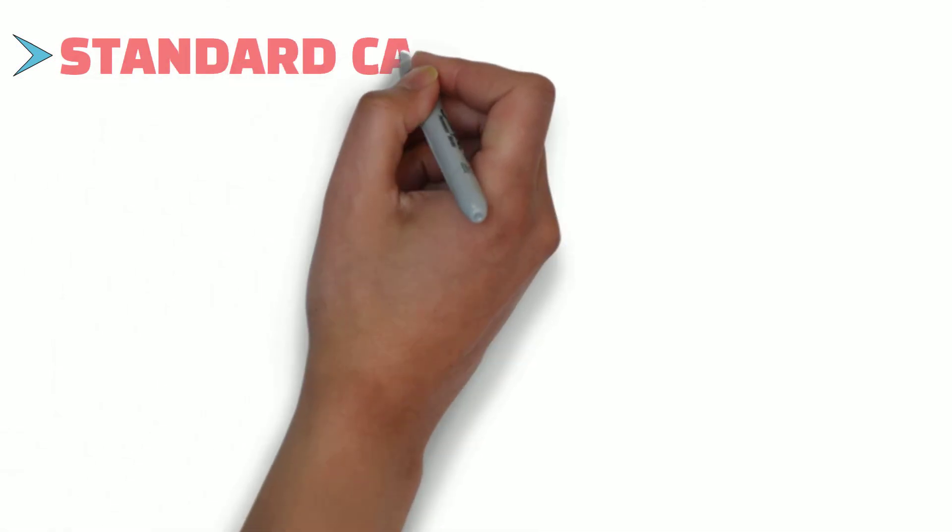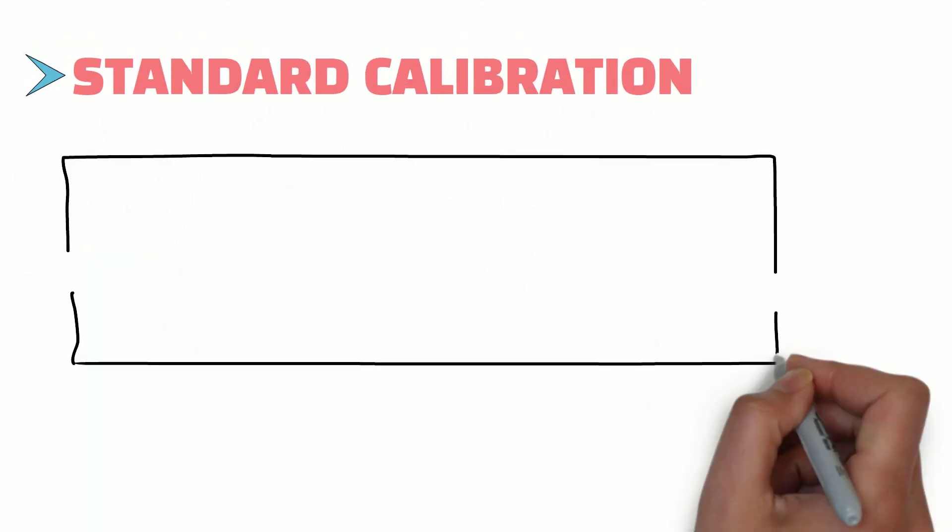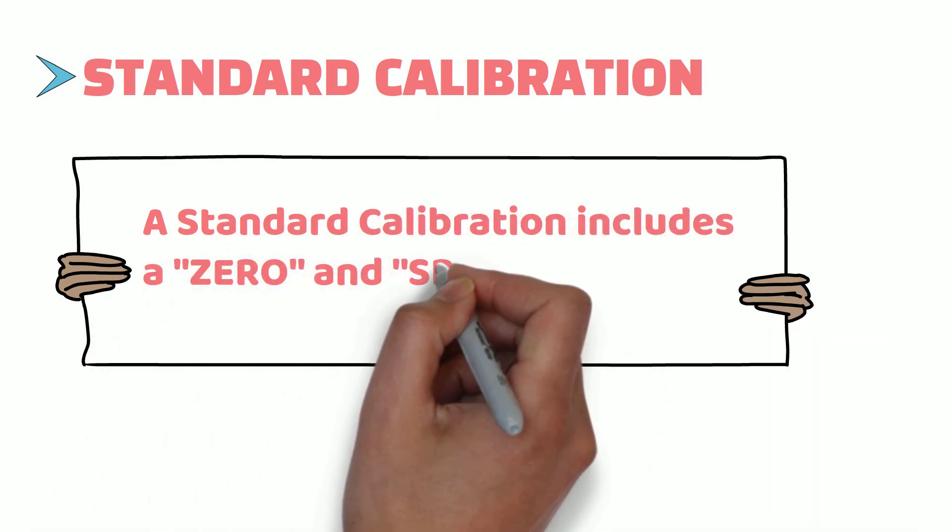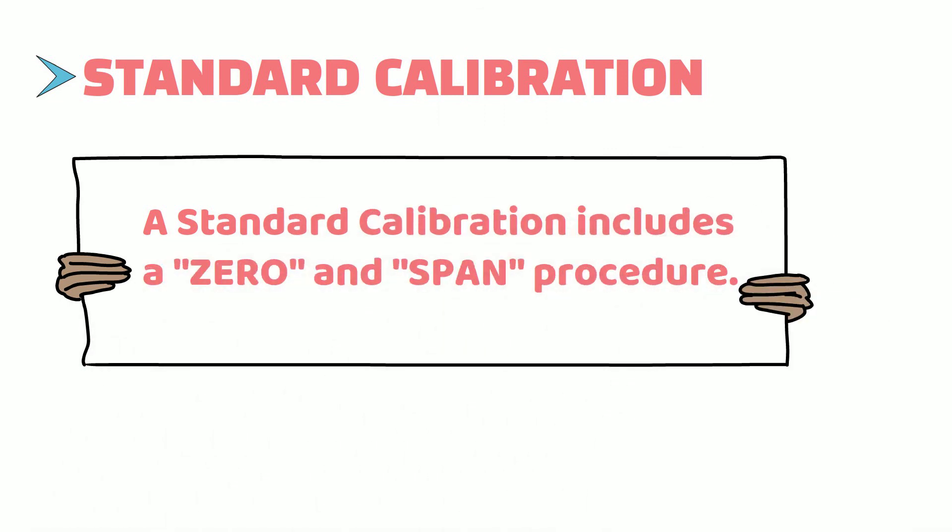Standard calibration. A standard calibration includes a zero and span procedure. If the user chooses to only perform zero procedure, they may do so by pressing the zero button on the controller instead of the calibrate button. In this video, I will show you both calibration procedures.